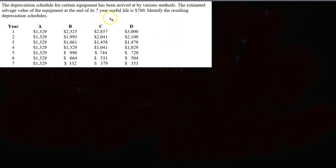So let's read the problem. The depreciation schedules for certain equipment has been arrived at by various methods. The estimated salvage value of the equipment at the end of its 7-year useful life is $700. Identify the resulting depreciation schedule. Alright, you'll see why this is tricky.